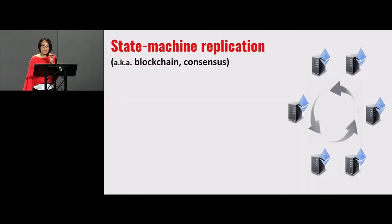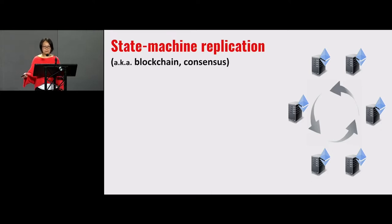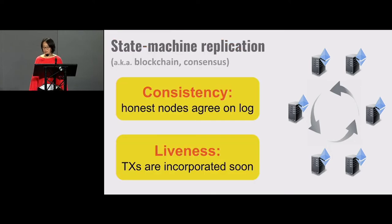I will begin by defining the problem we will be trying to solve today. Behind all these cryptocurrency systems, we have a core protocol called the blockchain protocol, also called state machine replication and BFT consensus. In state machine replication, we have a distributed system of nodes, and these nodes want to agree on the linear ordering of the log of transactions. We care about two very important security properties, namely consistency and liveness.